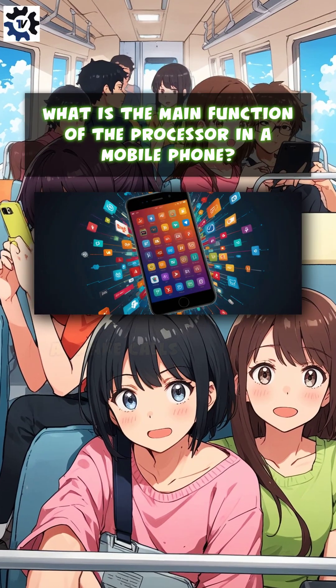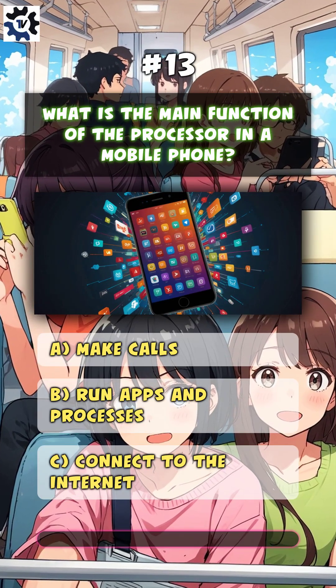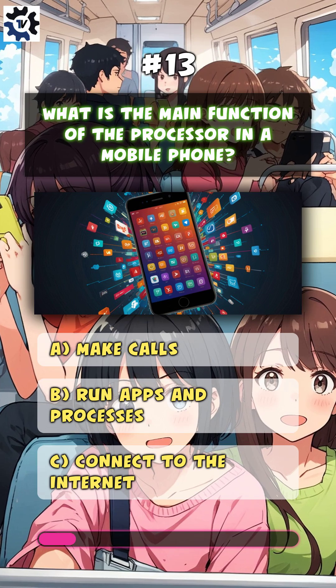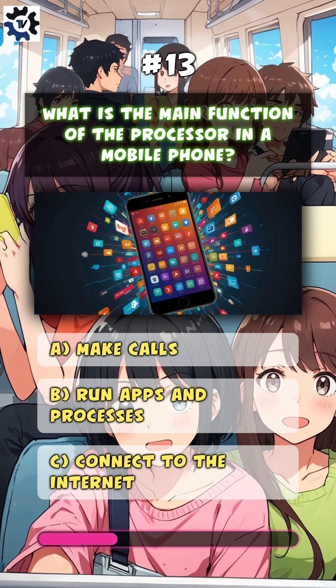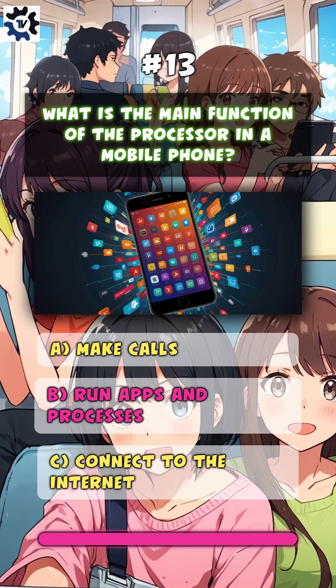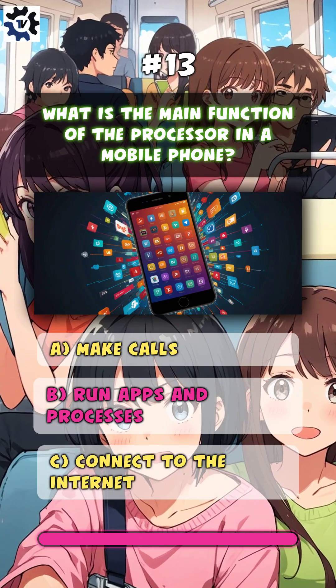What is the main function of the processor in a mobile phone? B. Run apps and processes.